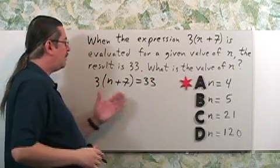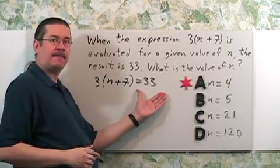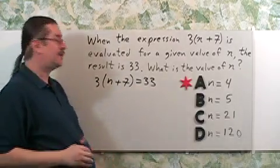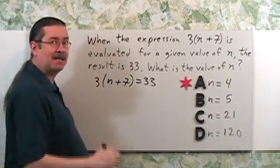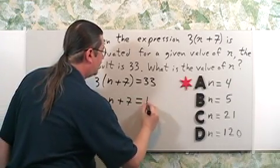Now you can ask yourself, 3 times what must be 33? Hmm. 3 times 11. Oh. So this inside part must be 11. Let's write that down. The inside part has to be 11.